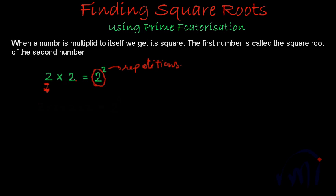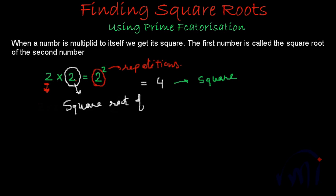So the square of 2 is 2 multiplied by 2, written as 2 to the power 2, and its value is 4. This is called the square of 2, and 2 is called the square root of 4. Square root is represented by the radical sign — this is called root or square root. If I write 4 below this sign, its value will be 2. So 4 is the square of 2, and 2 is the square root of 4.